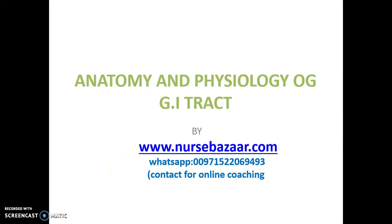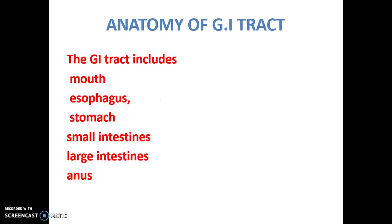Welcome to Nerdsbazaar.com. Today our topic is anatomy and physiology of the GI tract. The anatomy of the GI tract starts with the mouth, then comes the esophagus, stomach, small intestine, large intestine, and anus.